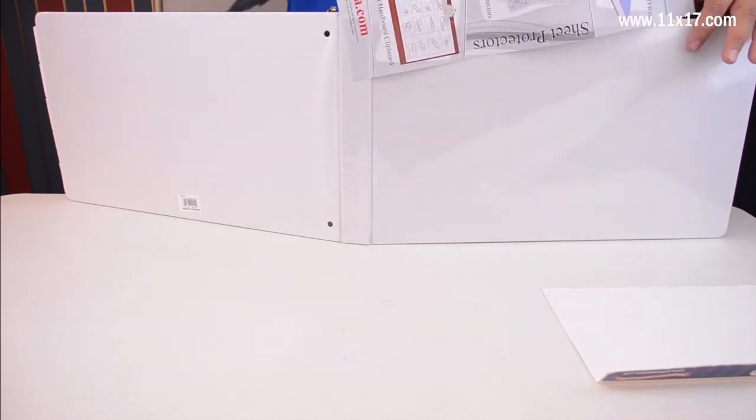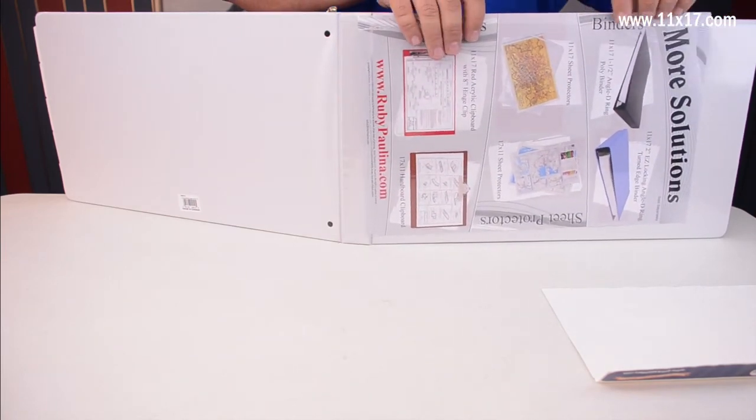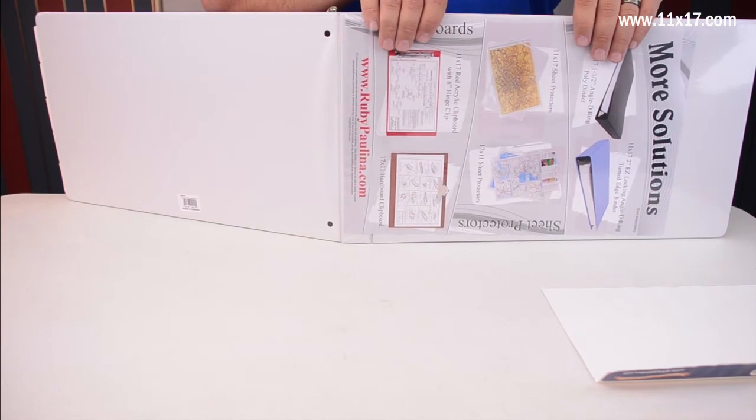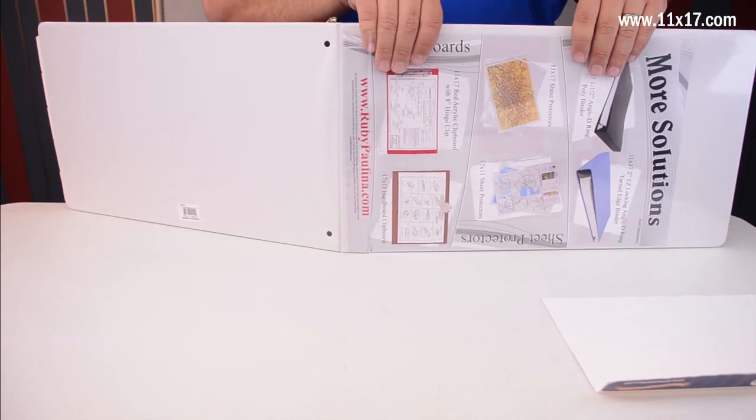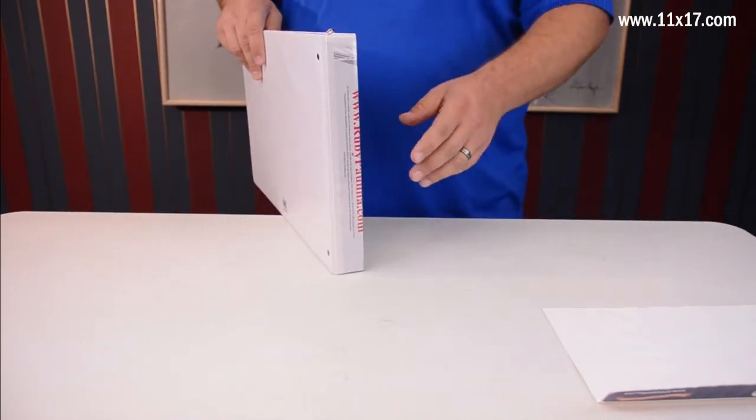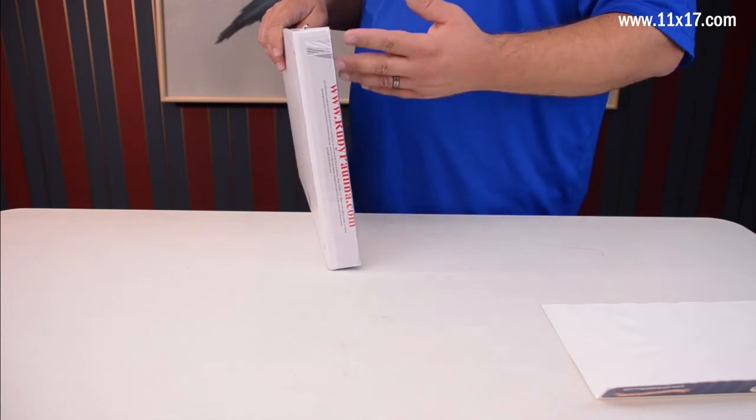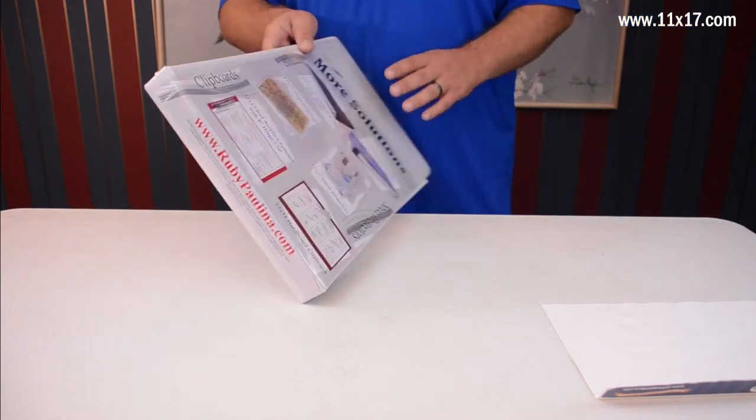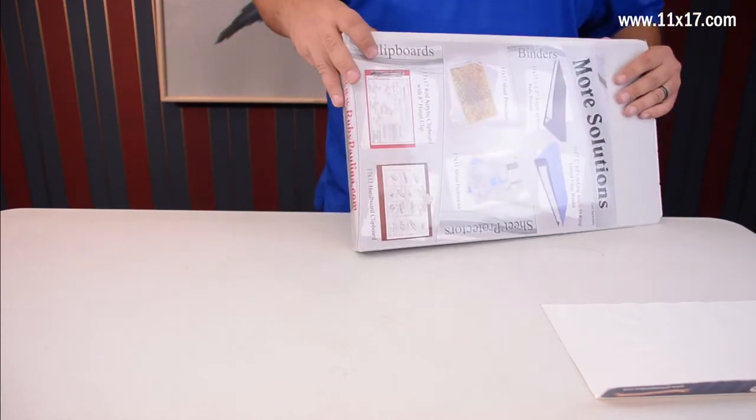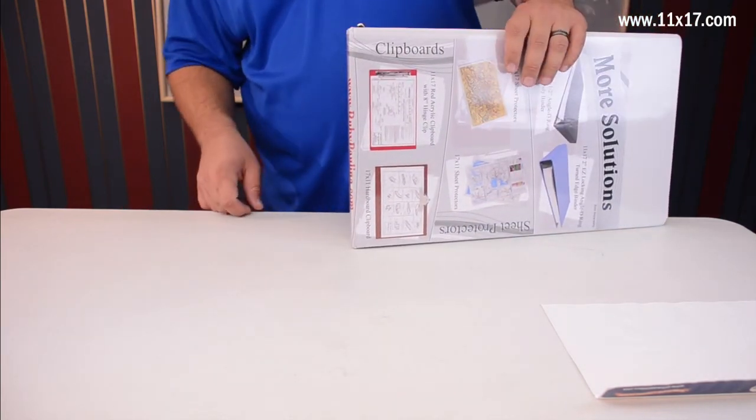Again, with this particular product, it's susceptible to the same problems as the Cardinal. This top pocket's going to come open over time and dust and all kinds of nastiness is going to get inside there. Then when you close that binder up, you can see how it prints over there. They do have templates online for you to get that. Of course, we can see that 11 by 17 sheet—it's not going to come all the way to the end. It still looks kind of funny to me.